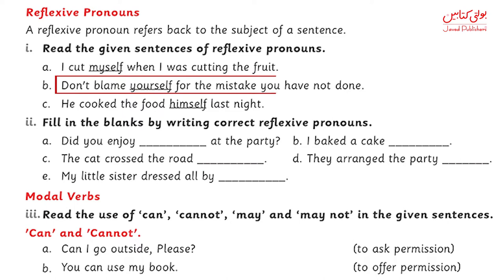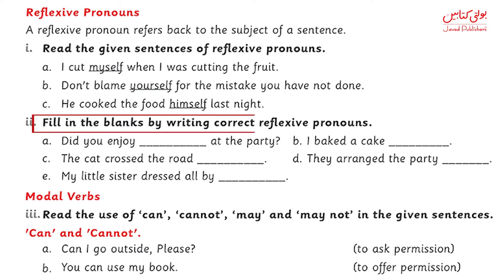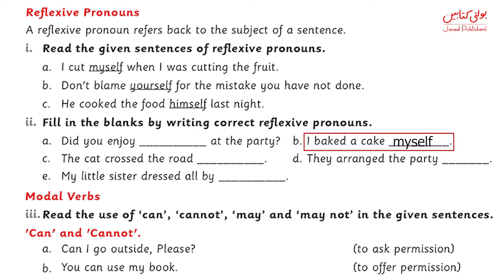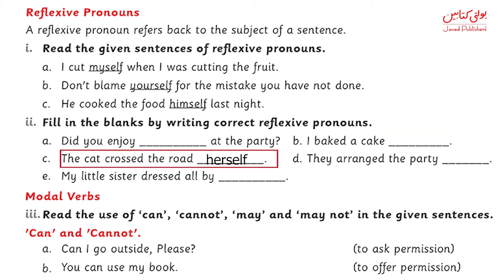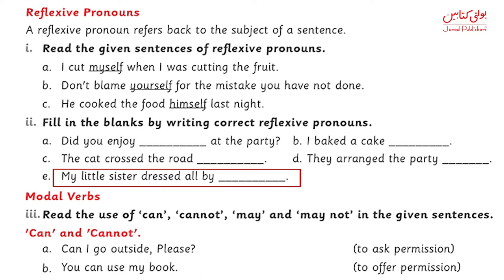Next: don't blame yourself — yourself is reflexive. He cooked the food himself — himself is reflexive. Now we will fill in the blanks. A: Did you enjoy yourself at the party? B: I baked a cake myself. C: The cat crossed the road herself. D: They arranged the party themselves. E: My little sister dressed all by herself.